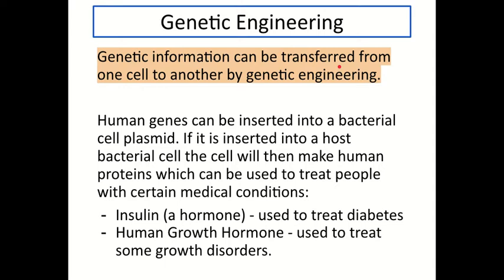One use of genetic engineering is to take human genes and insert them into a bacterial cell plasmid. Remember from Cara 3, genes are sections of DNA that code for proteins — so this means taking the section of DNA that codes for a specific protein that humans make and putting that code into a bacterial plasmid. If you insert that modified bacterial plasmid into an actual bacterial cell, then that cell will make human protein. Bacteria are fairly cheap and quick and easy to grow, so this makes them great mini factories to make proteins we need for medicine.